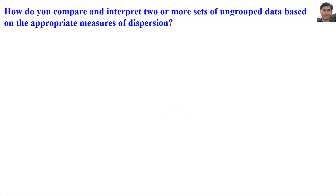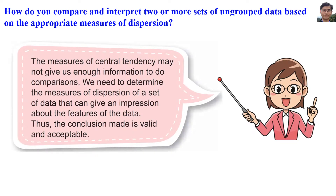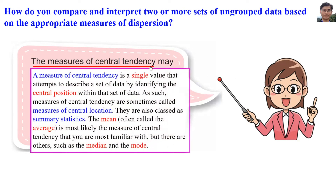How do you compare and interpret two or more sets of ungrouped data based on the appropriate measures of dispersion? The measures of central tendencies will not give us enough information to do comparison. A measure of central tendency is a single value that attempts to describe a set of data while identifying the central position within that set of data. As such, measures of central tendencies are sometimes called measures of central location, and they are also classed as summary statistics.